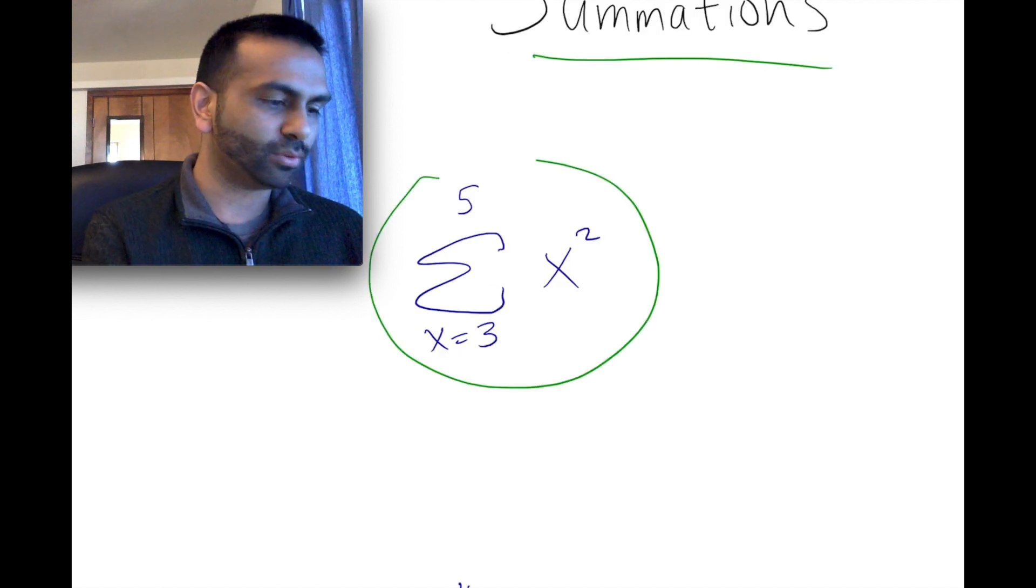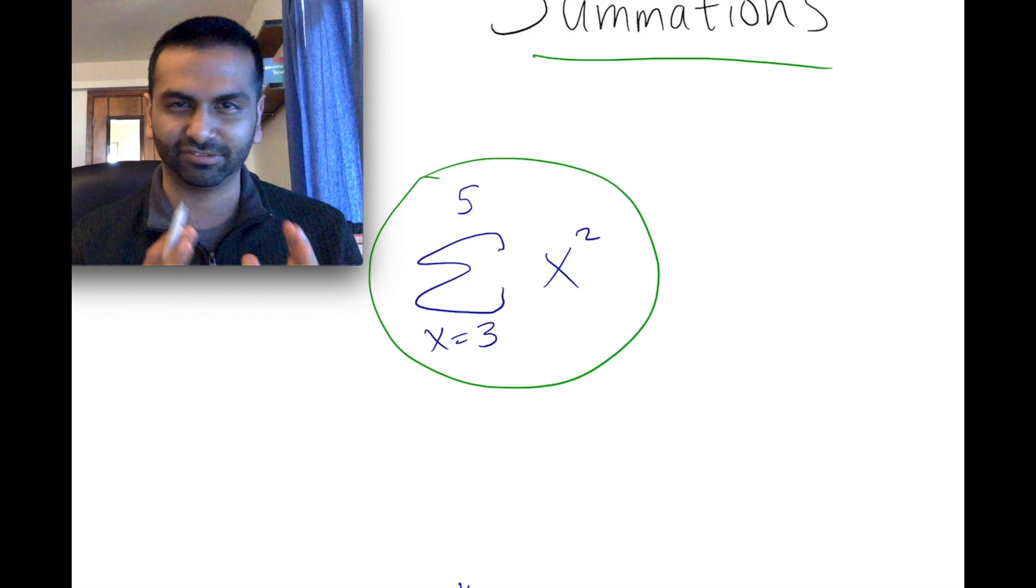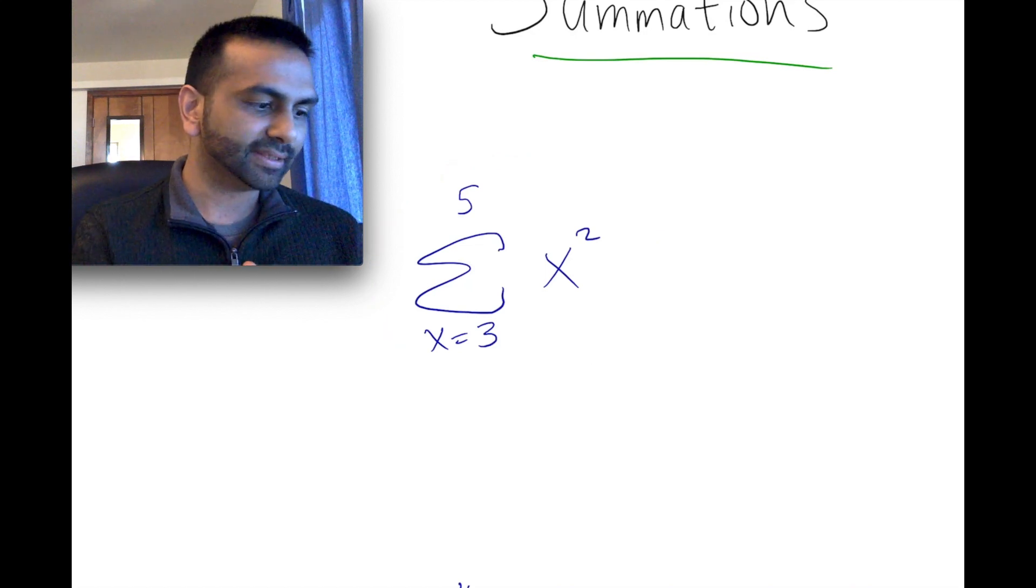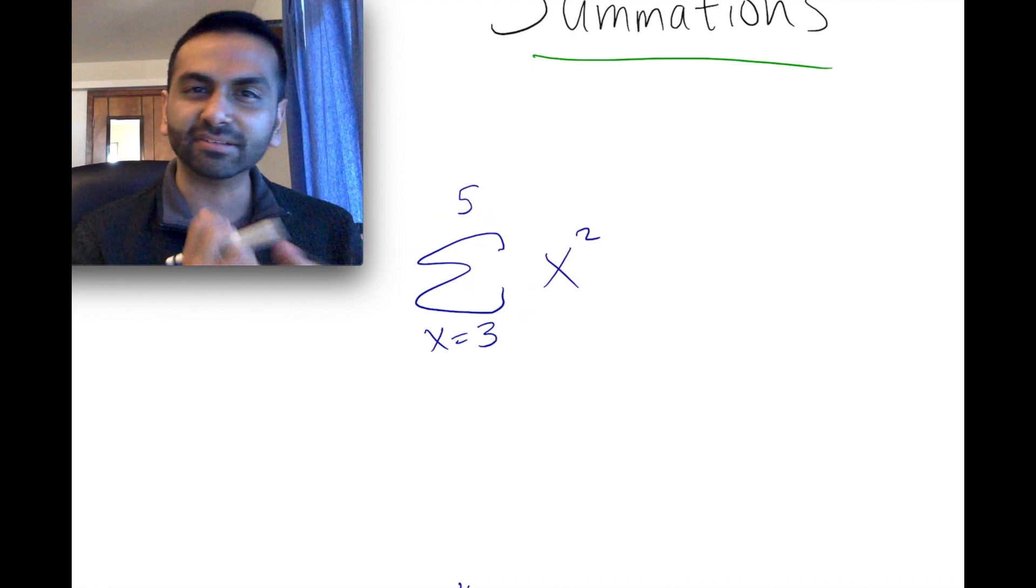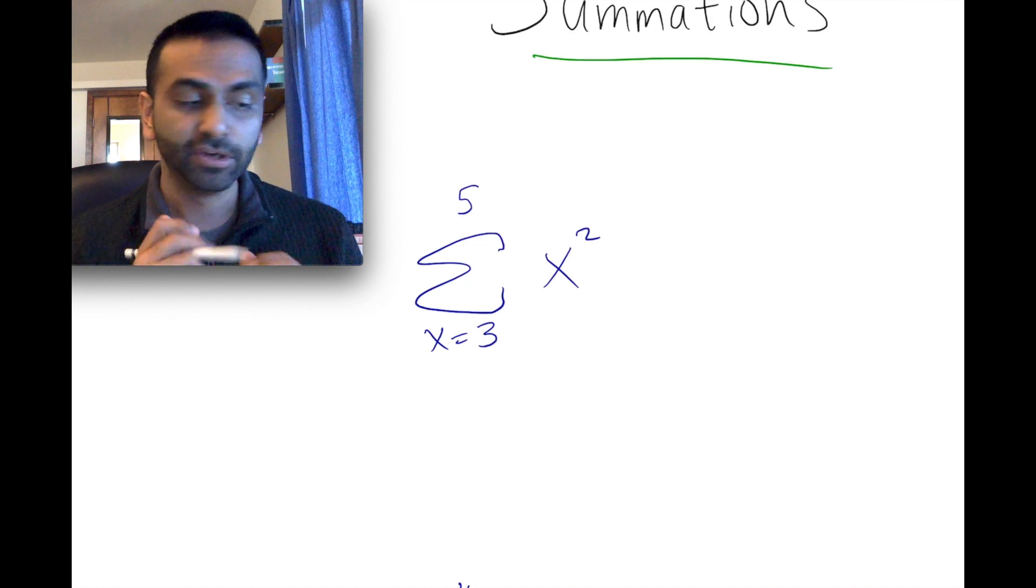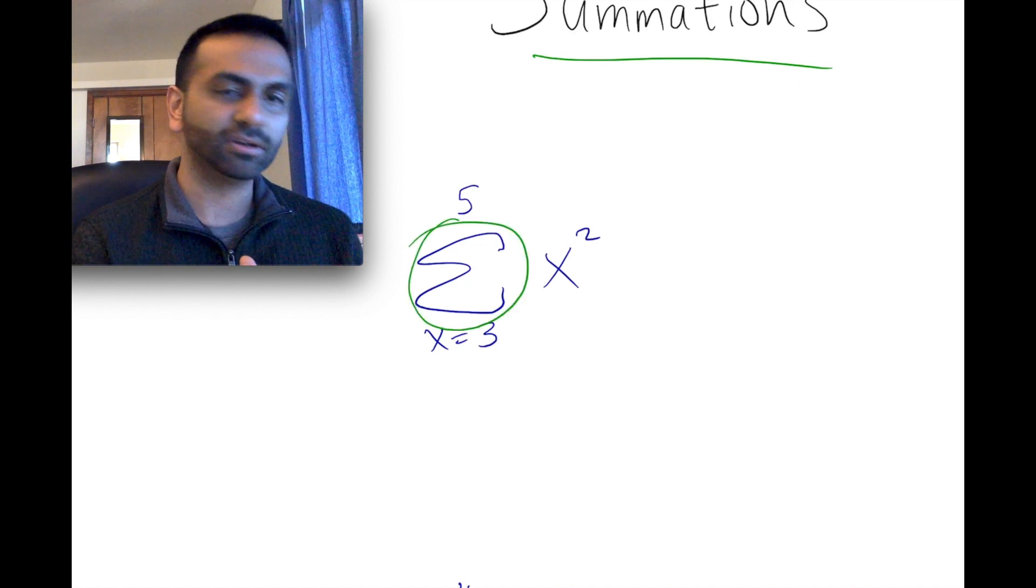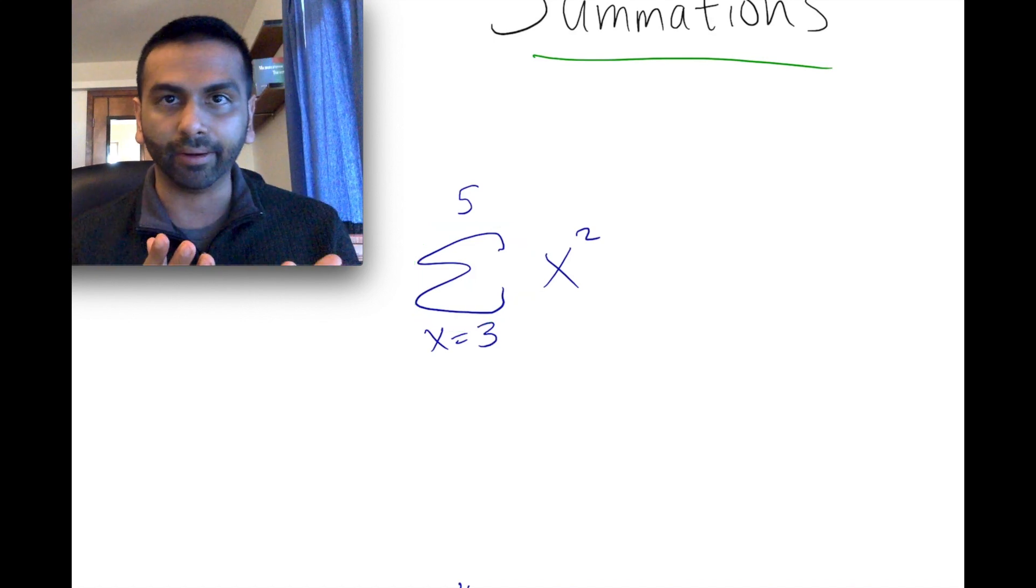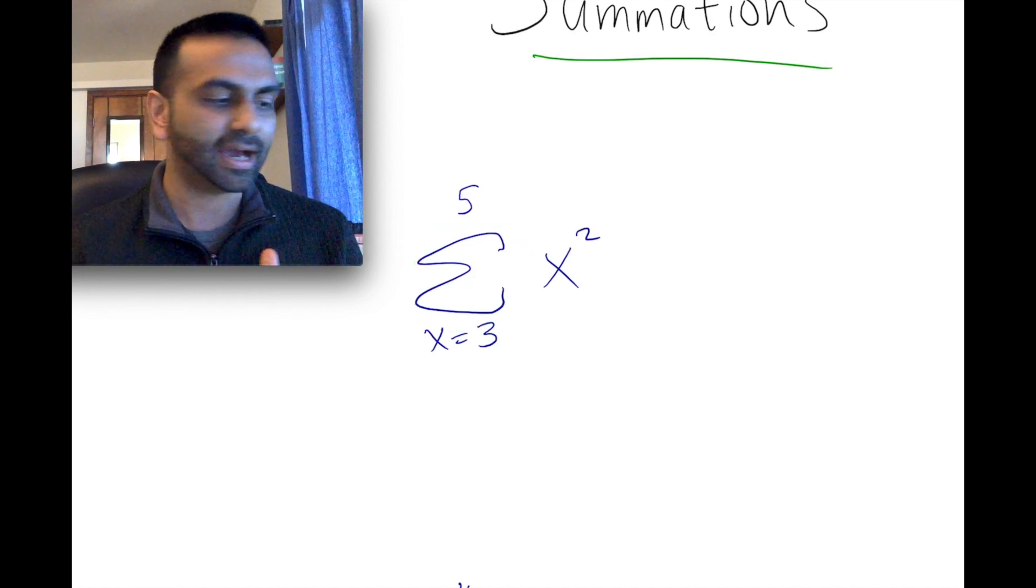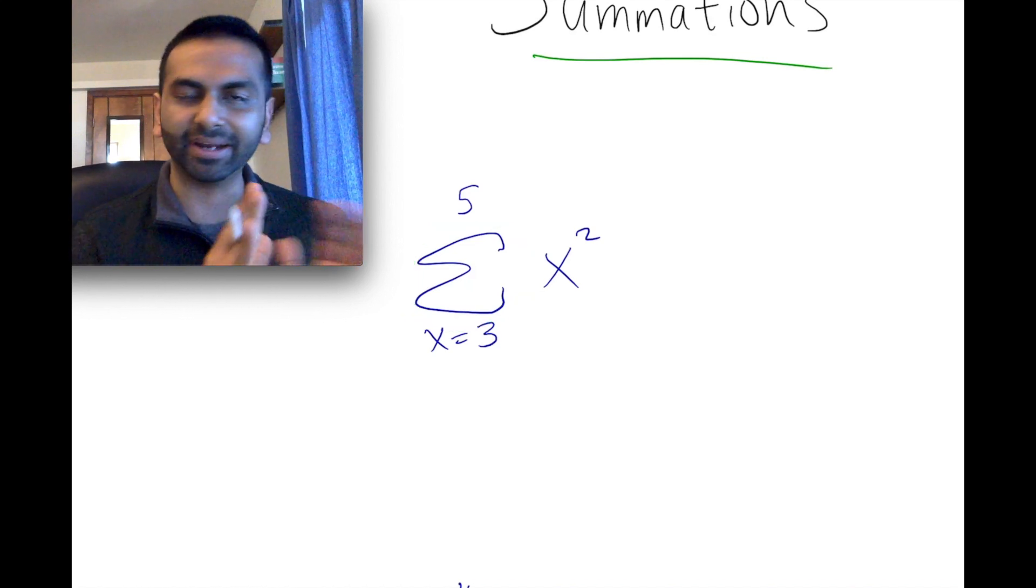So if we have this question, what's the sum? How do you read this, first of all? The way to read this, this is talking about this - the way to pronounce this letter is sigma. And really, this is a Greek letter, but in this context, it means addition. So this means addition of this term, x squared. You're adding x squared to itself a bunch of times. So let's break down what all these parts mean.